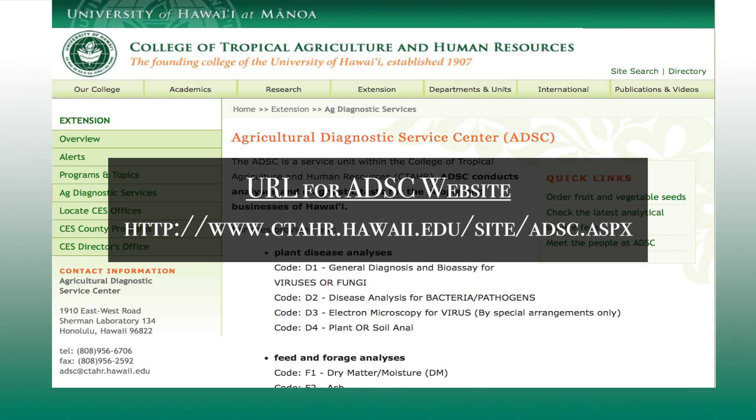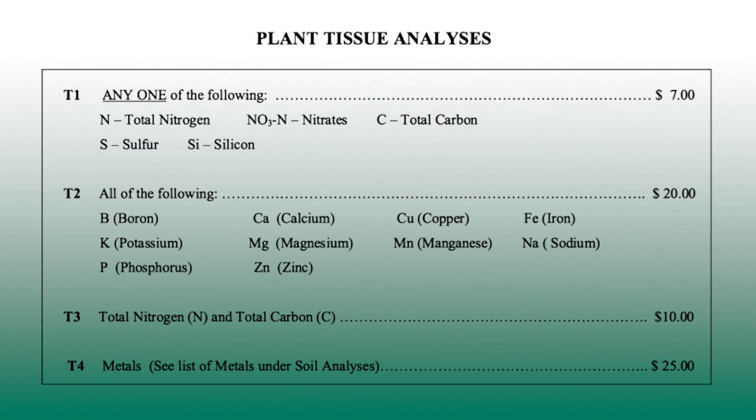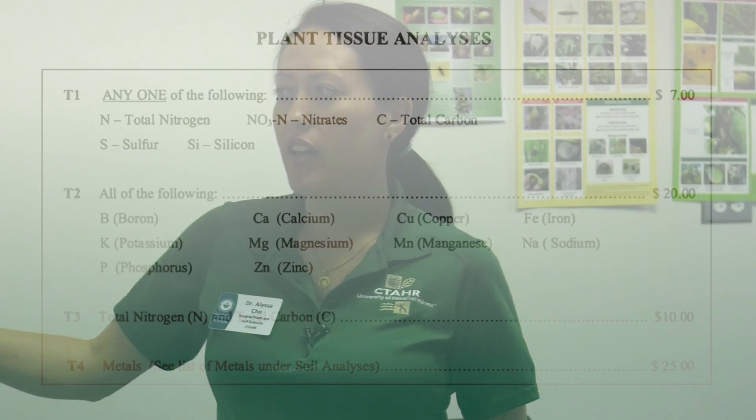This is the ADSC's website — you can go there to get general information about what type of tests they offer. You can submit your soil, your leaf tissue, and pest and disease samples as well. The first thing you need to know when you go in to submit your sample is what do you want your results to say. Just like with the soil analysis, there are different tests: T1, T2, T3, T4. Typically people select T2 because it's a pretty comprehensive list of macro and micronutrients. You can also select if you want to know your total nitrate levels, or if you're worried about metal contamination, we can do tests for metals as well.